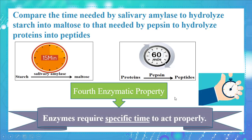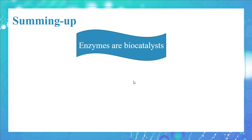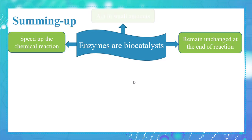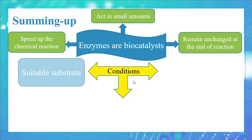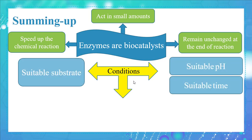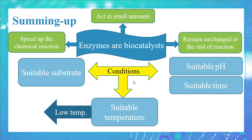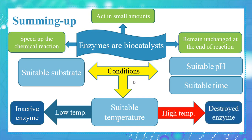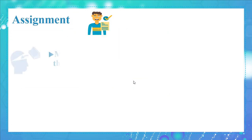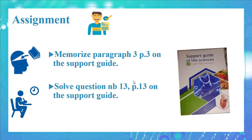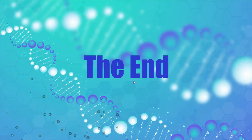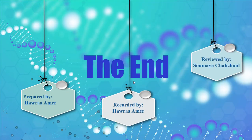Let's sum it up. Enzymes are biocatalysts — they speed up chemical reactions, remain unchanged at the end of the reaction, and act in small amounts. In order to function properly, enzymes require a suitable substrate, suitable pH, suitable time, and suitable temperature. At very low temperature the enzyme is inactive; at very high temperature the enzyme is destroyed. You will be assigned to memorize paragraph 3 page 3 and solve question number 13 page 13 on the support guide. Hope you enjoyed the lesson — study well and keep safe.